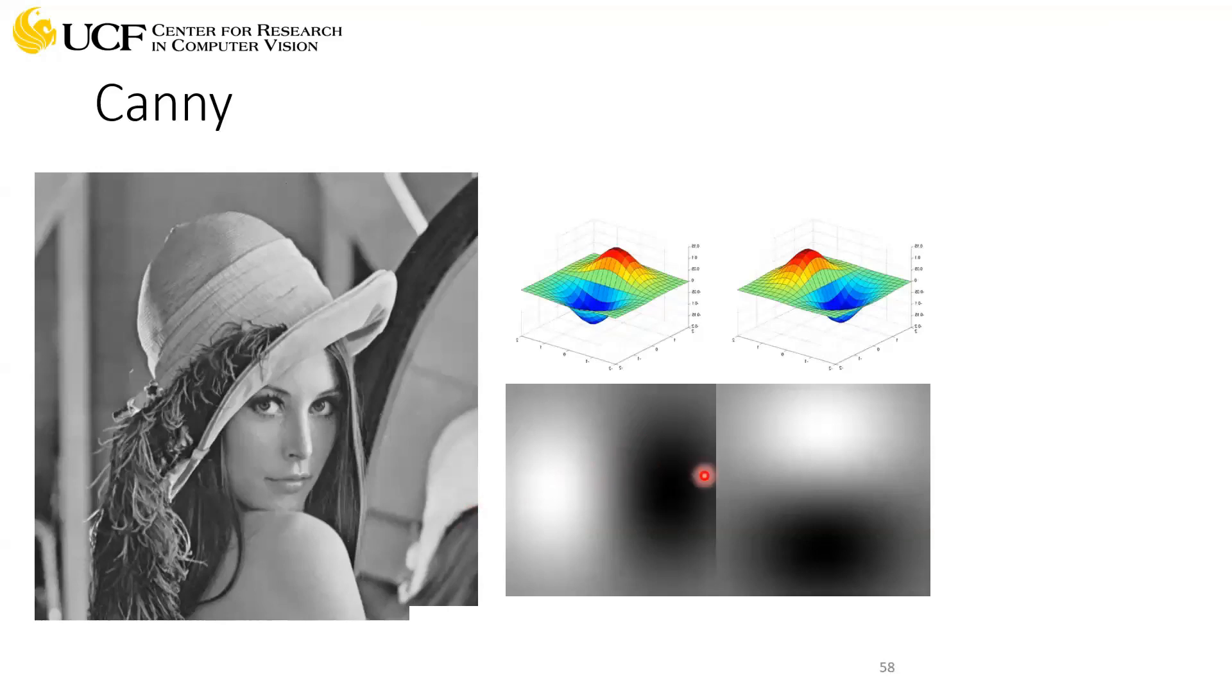And of course you can see the vertical edges and the horizontal edges. That's why using these two different derivative kernels, or you can say Gaussian kernels, helps you in finding edges in different directions.